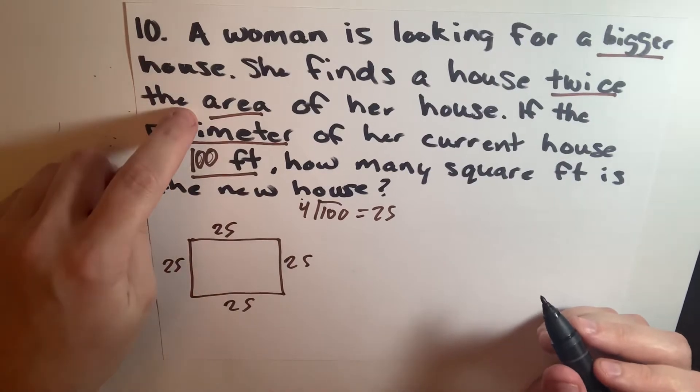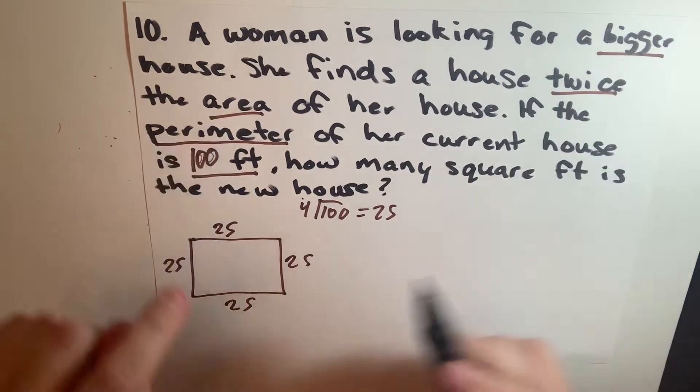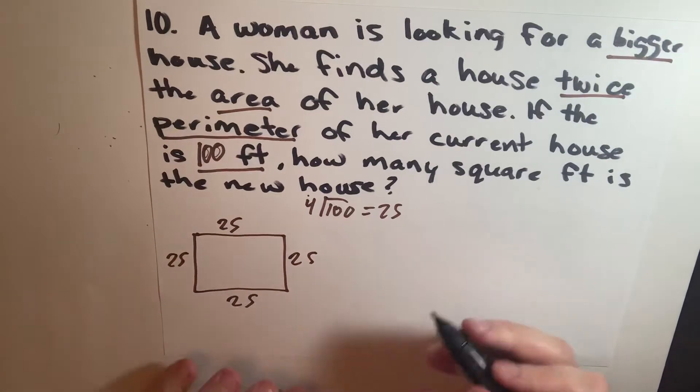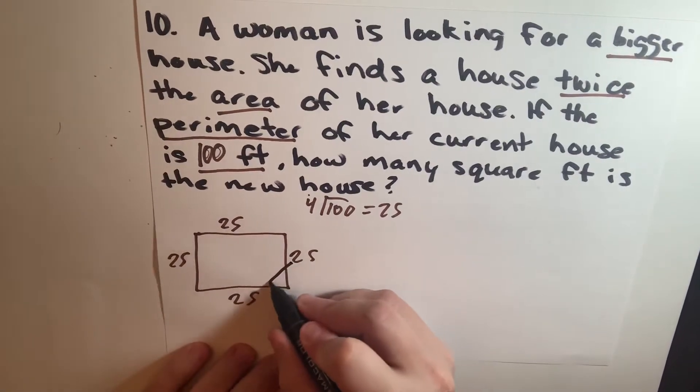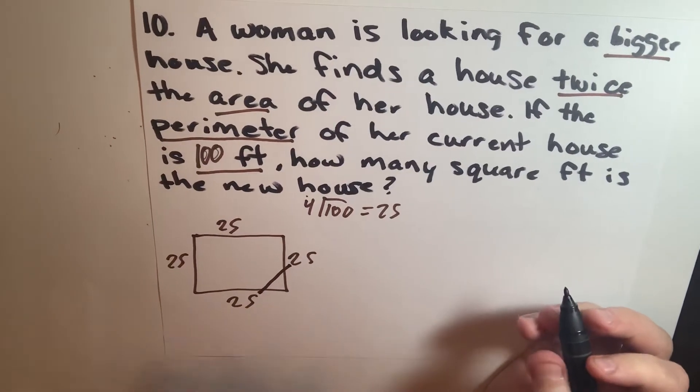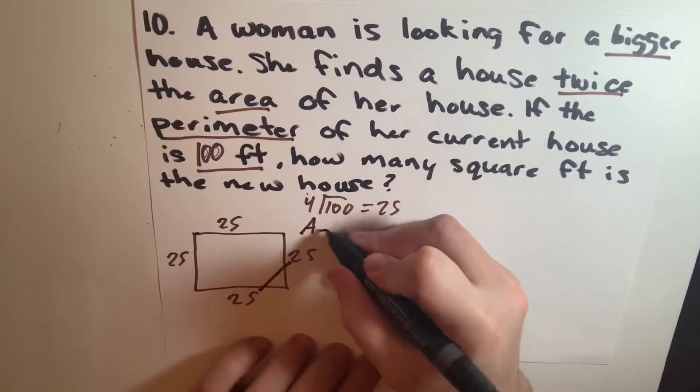But her new house is twice the area of her old house, so knowing the perimeter doesn't help us. We actually have to find the area, so we're going to do 25 times 25, remember, because the area is length times width.